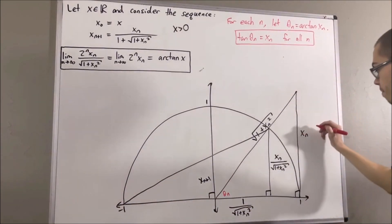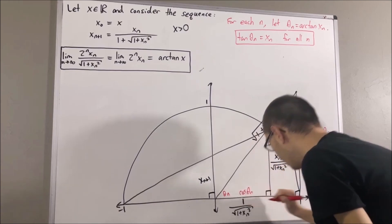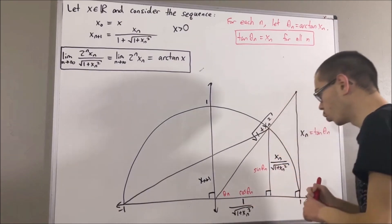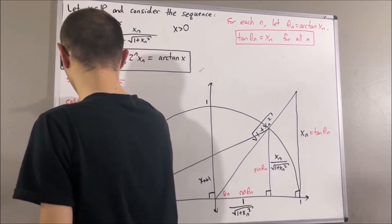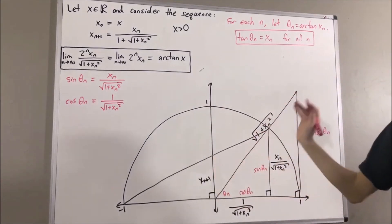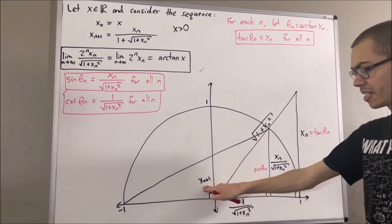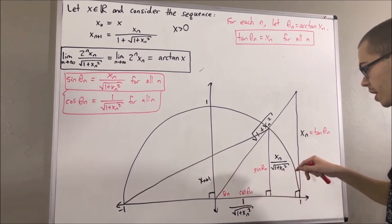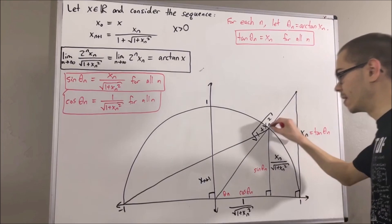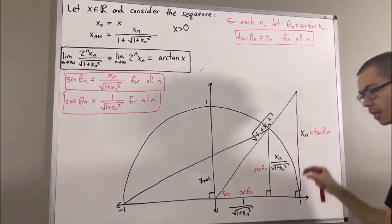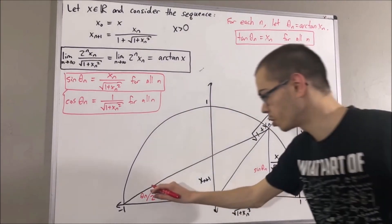Since xₙ equals tangent of θₙ and this is the unit circle, we know from trigonometry that this side length is cosine of θₙ and this side length is sine of θₙ. So sine of θₙ equals one expression and cosine of θₙ equals another, and since n is arbitrary, these hold for all n. Now, this angle is a central angle of the circle intercepting this arc, while this angle is an inscribed angle intercepting the same arc. By the inscribed angle theorem, this angle is precisely half of the central angle, so this angle is just θₙ over 2.